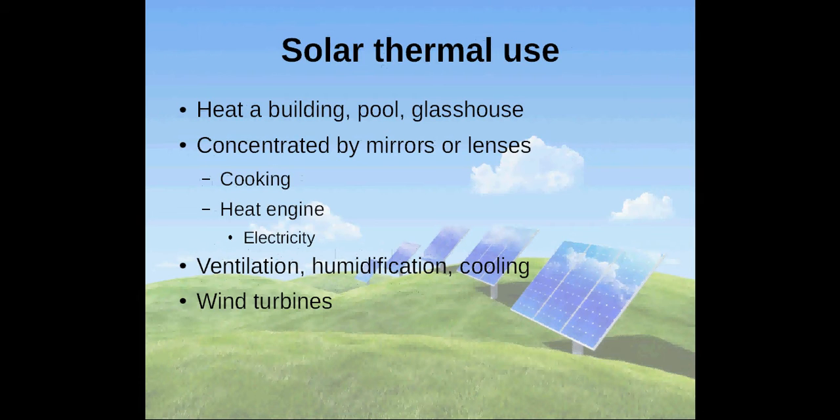Of course, heat can be used directly, for example to heat a building, pool, or greenhouse. However, there are countless other ways to use heat. For example, light can be concentrated by mirrors or lenses for cooking or for running a heat engine. A heat engine can again be used to produce electricity.